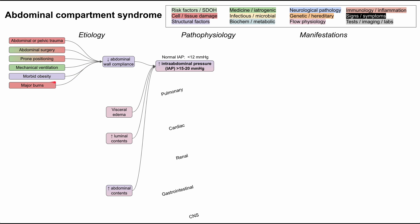Morbid obesity can also decrease abdominal wall compliance — the more layers of fat, the harder it is to increase abdominal volume. Major burns can cause edema and decreased compliance as well, since scarred and inflamed tissue from burns does not bend as easily as natural collagen in the normal abdominal wall.